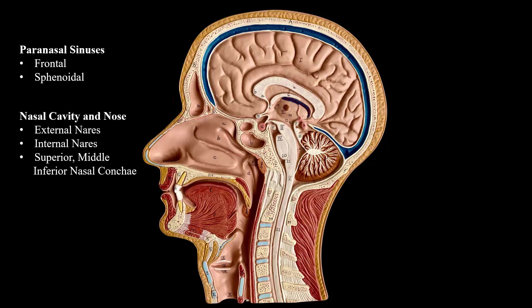Next, the nasal cavity. We have the external nares here and the internal nares here. Then the superior, middle, and inferior nasal conchae.